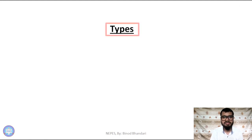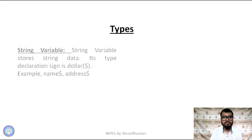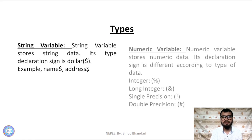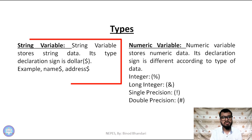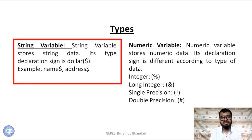Now, these variables are of two types. One is string variable and the next is numeric variable. String variables store string data. These string variables are responsible for holding string data. The declaration sign is the dollar sign ($). We use the dollar sign at the end of any name to store string variables.